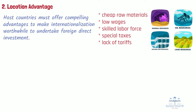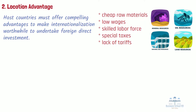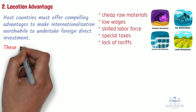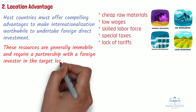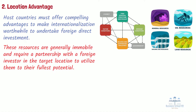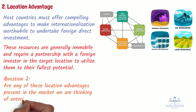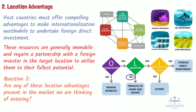Furthermore, the attributes vary among the chosen locations. Usually, location advantage refers to natural or manufactured resources. These resources are generally immobile and require a partnership with a foreign investor in the target location to utilize them to their fullest potential. Porter's diamond model could be a great tool to determine these location advantages. Therefore, the second question that management should ask itself is: are any of these location advantages present in the market we are thinking of entering? If the answer is no, it might be wiser for management to keep production within the home country and export products instead. However, if the answer is yes, it might be better to perform certain value chain activities abroad through licensing, franchising, or foreign direct investment.